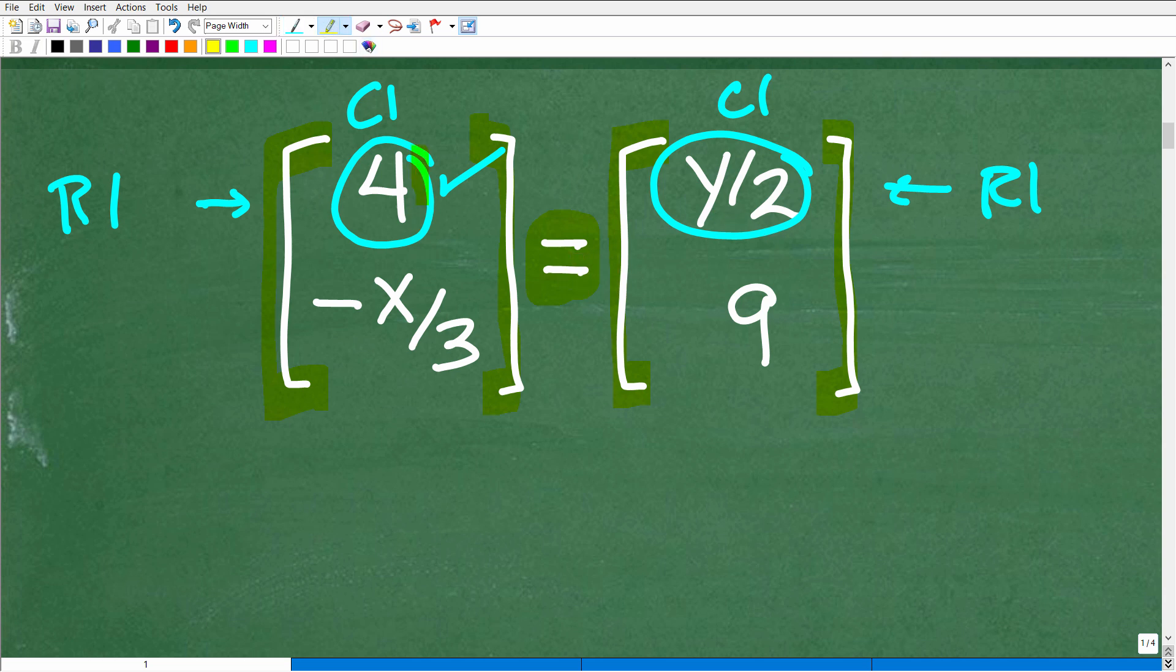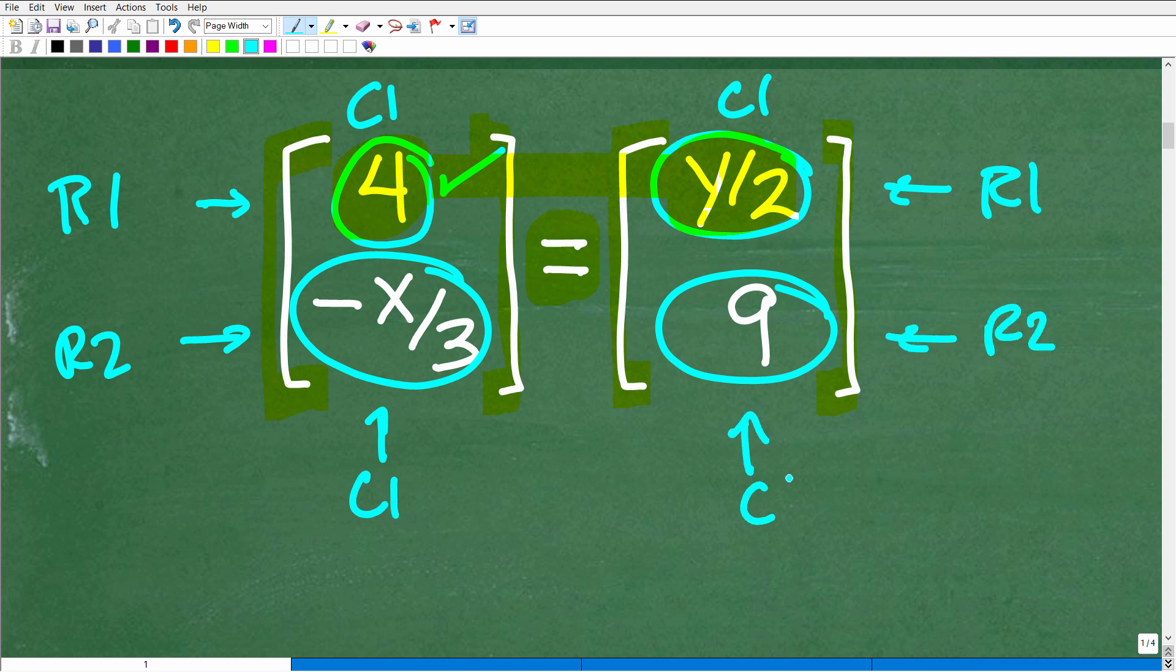But if we're saying these are the same, well, then if this is four, then this must be four. So we can figure out what y is by creating an equation. And then down here we have negative x over three, and we're going to equate that to nine, because these are in the same position in terms of these matrices. We're dealing with row two, column one, and here we have row two, column one.